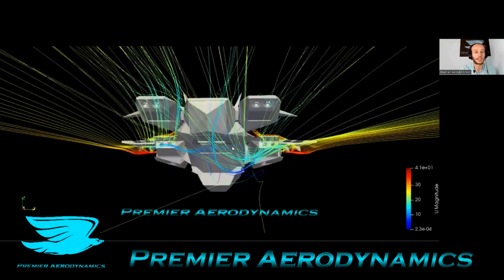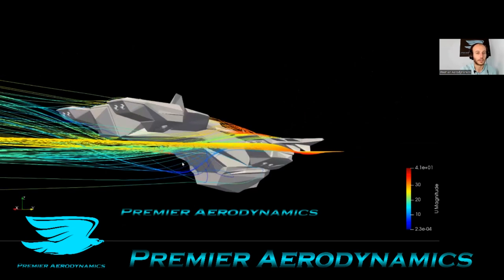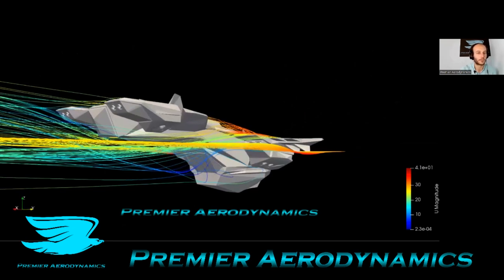You have the streamlines mostly going over the wings and they get sucked in and back into the cargo area. So the streamlines here, they get sucked in, for example.